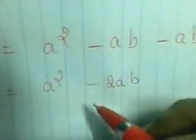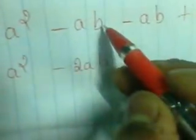Now the final step. The total area is a² + (-ab) + (-ab) + b². This gives a² - ab - ab + b². Adding the two middle terms: -ab + (-ab) = -2ab. Therefore, (a - b)² = a² - 2ab + b². This is the (a - b)² formula, derived using the geometrical method.